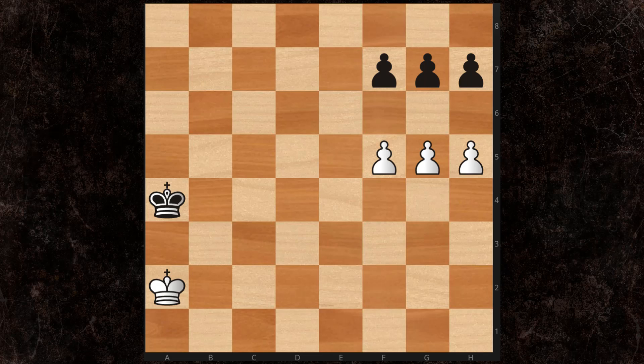This is a very classic 3-pawn versus 3-pawn breakthrough, and it's a must-know. All the experts and A players will know this position, and you'll get it every once in a while in a game. So with White to move, it's actually quite simple. If you want to pause the video, now you can.